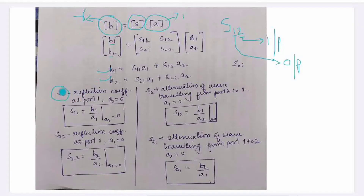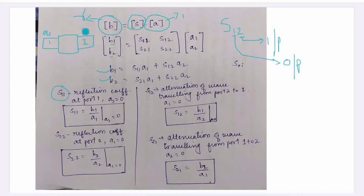S11 is the reflection coefficient at port P1. We can say it is the reflection coefficient at port 1. In a two-port network, S11 relates to the input side — the element of the input port.